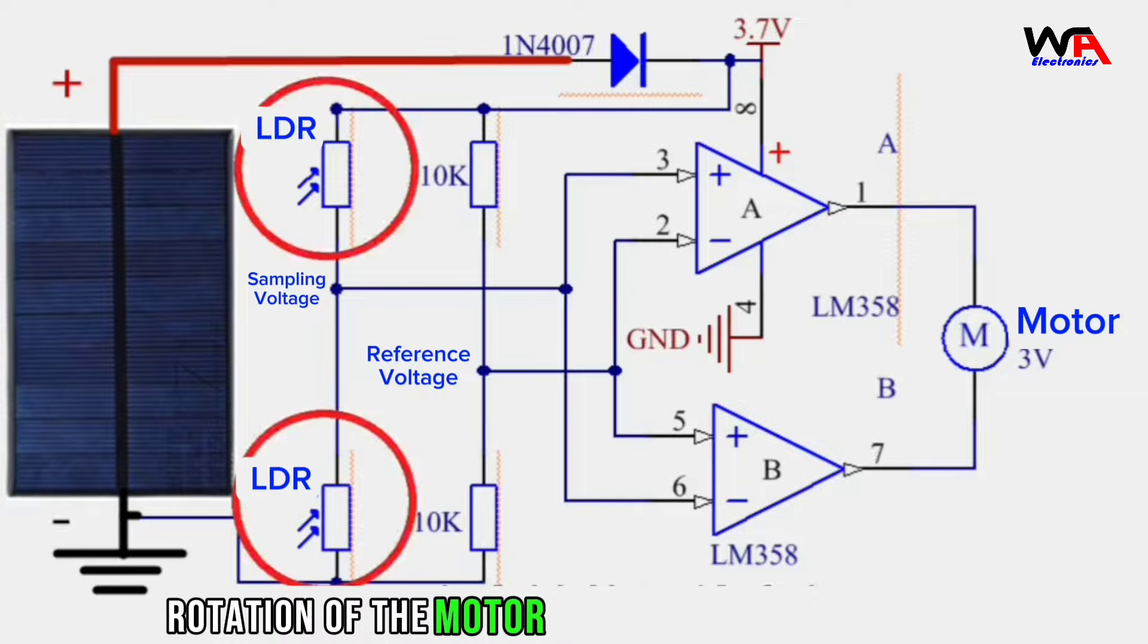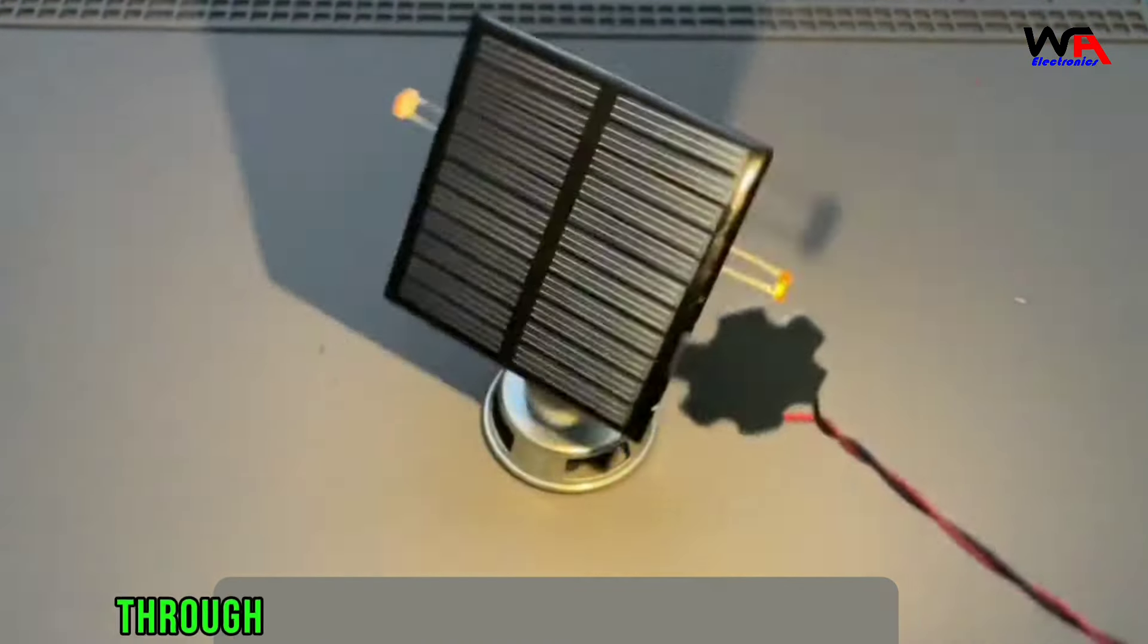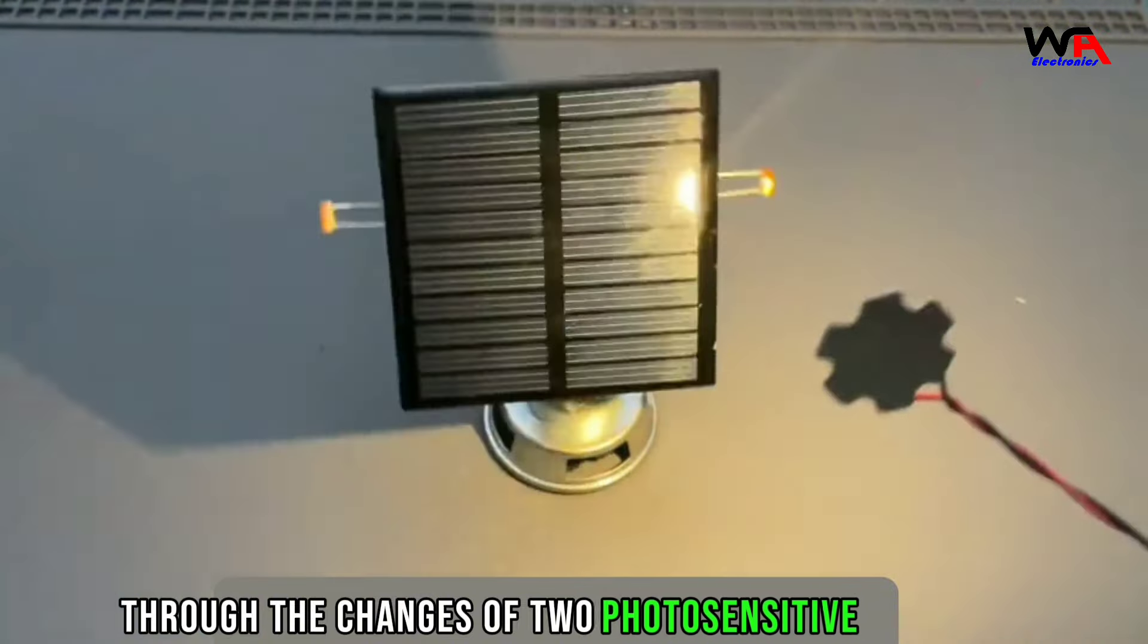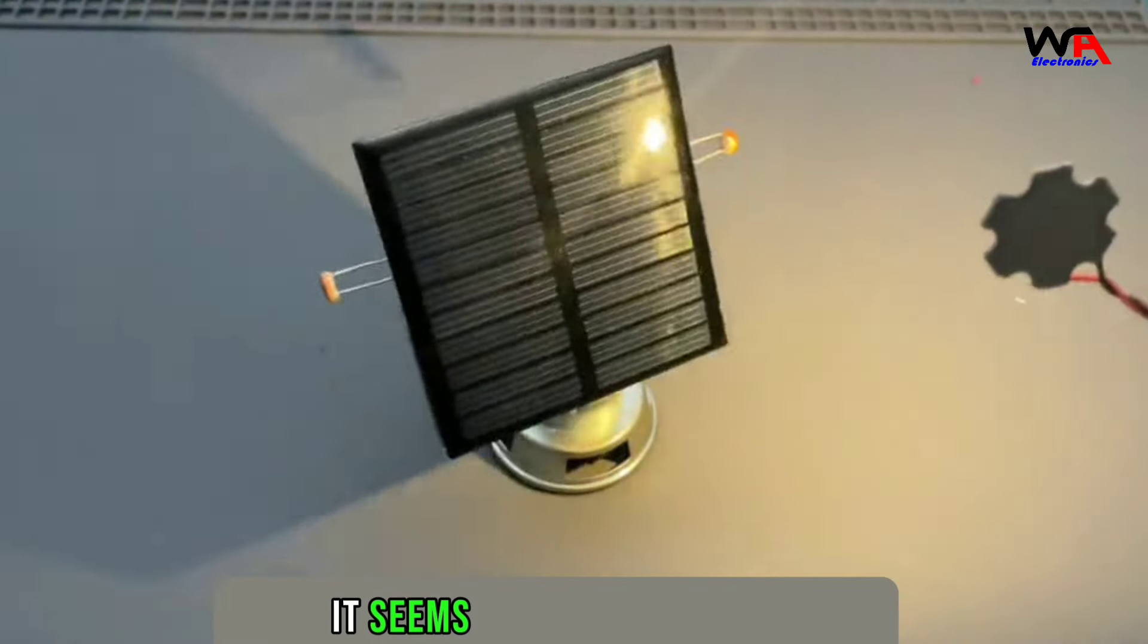Rotation of the motor can control the tracking effect of solar energy through the changes of two photosensitive resistors. It seems quite technological.